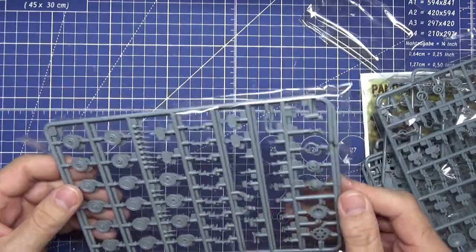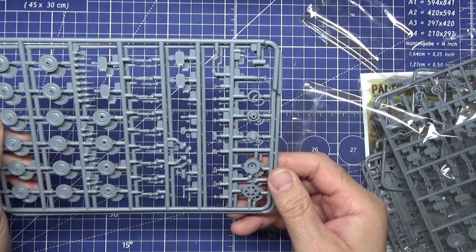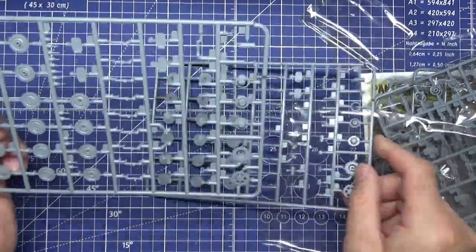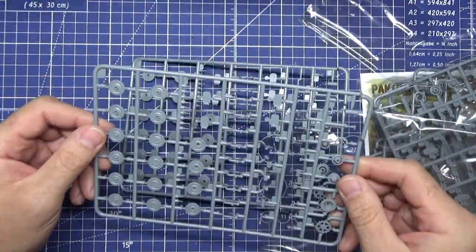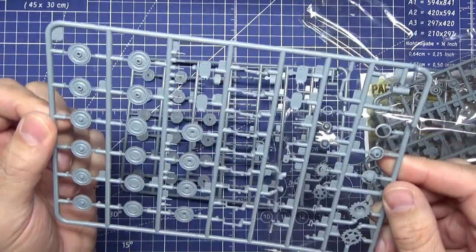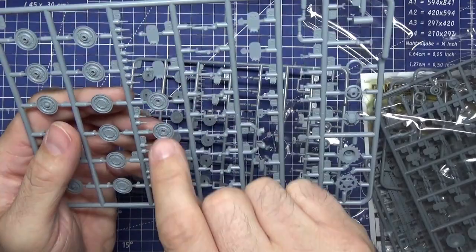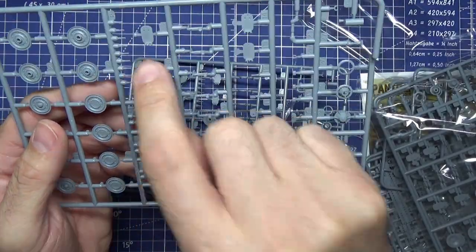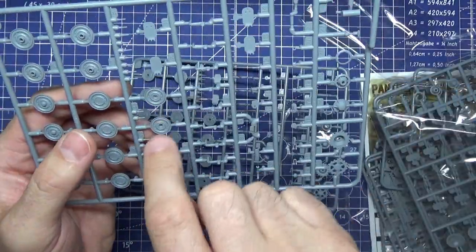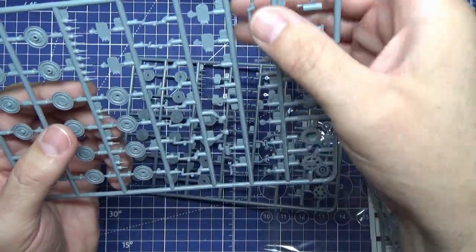Right, again two sprues, these ones are A. You can see lots of tiny ones - 34s, 33, 35 there. And here you've got your hatches for your doors.